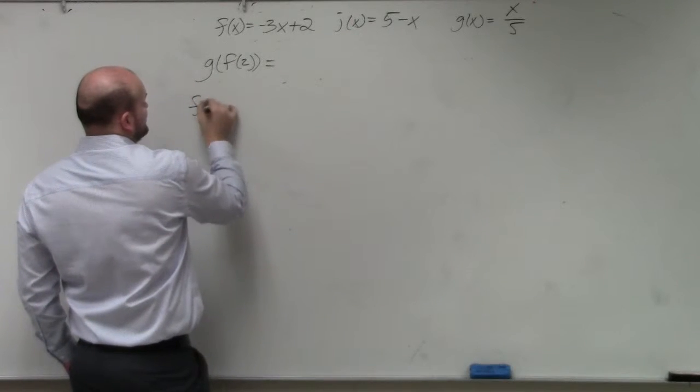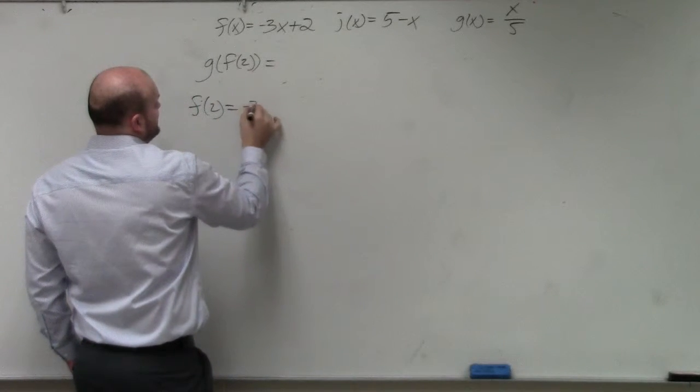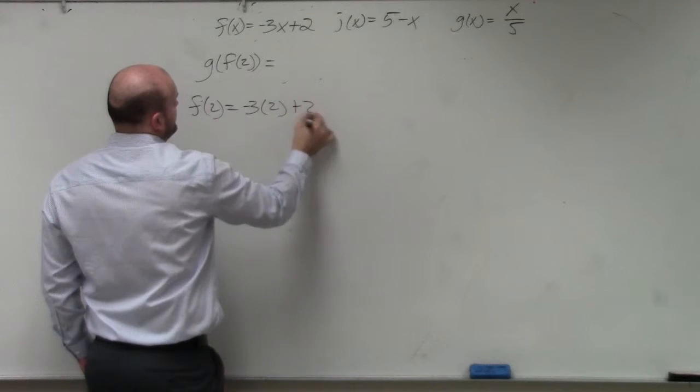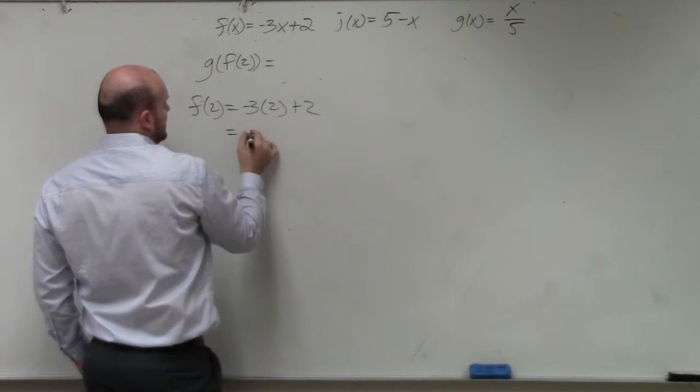So first thing I want to do is figure out what f of 2 is. So that's going to be negative 3 times 2 plus 2, which is negative 4.